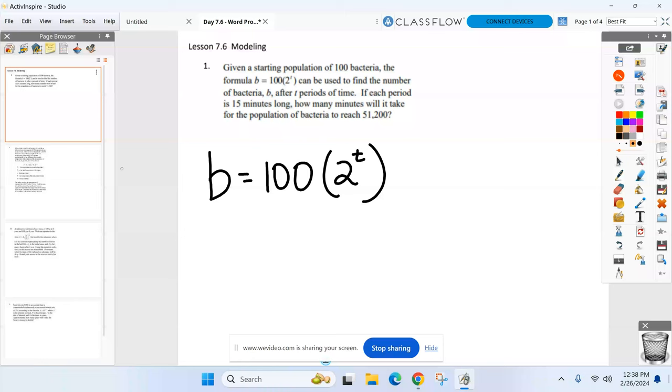So again, first thing is figure out what all the darn letters mean. I got a B up here. That is, looks like the number of bacteria, B. And then I got a T up here, which is periods of time. It's only two variables. B meaning the number of bacteria. T is the periods of time.